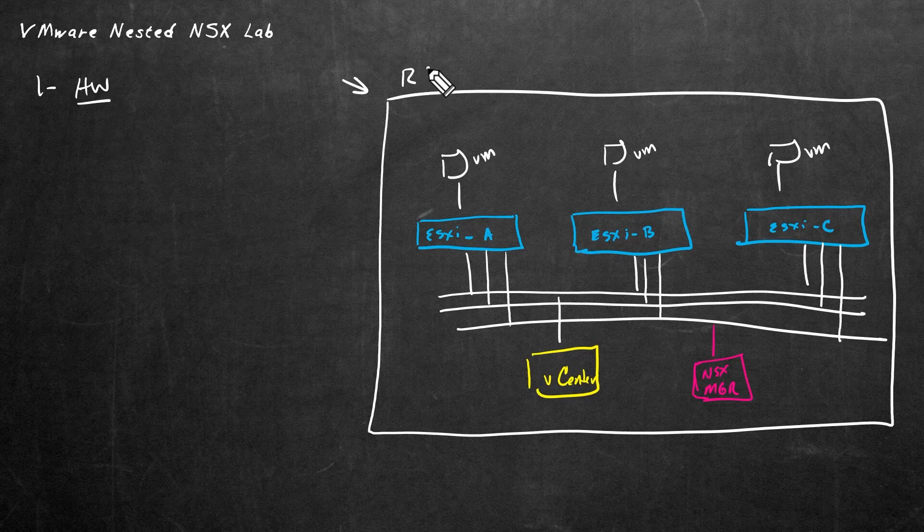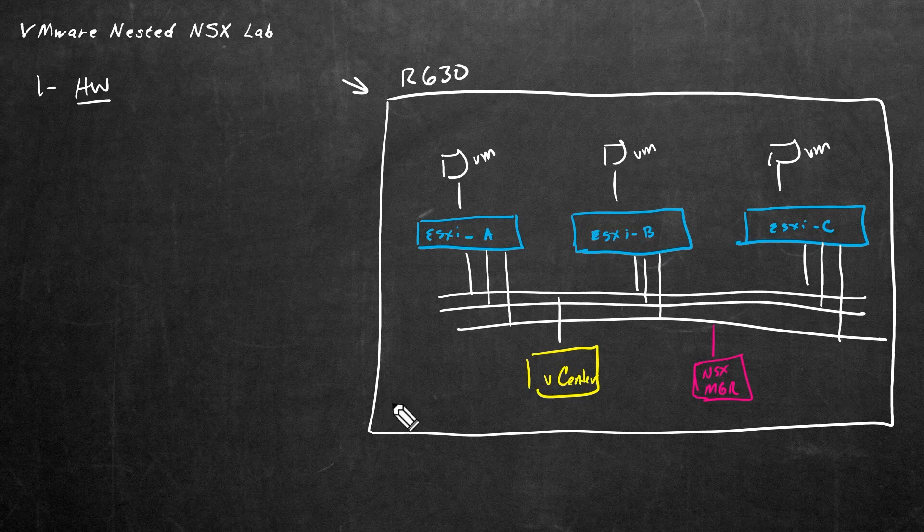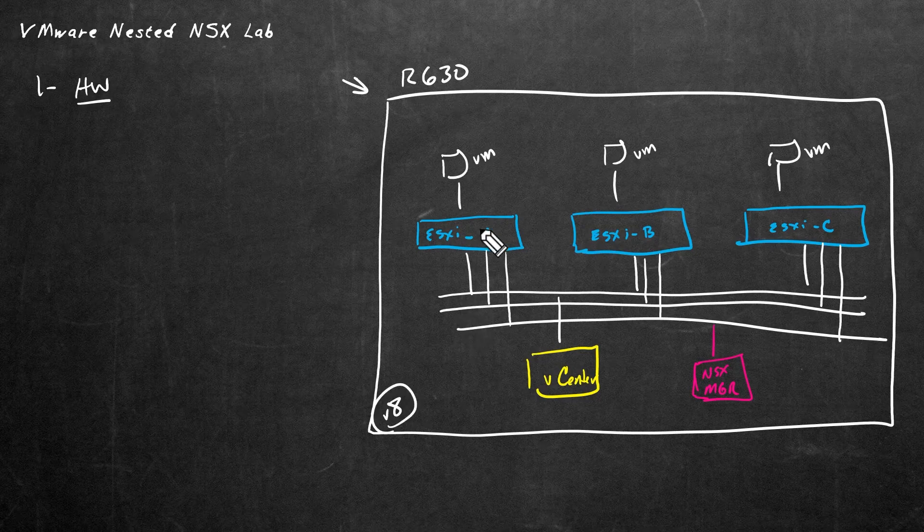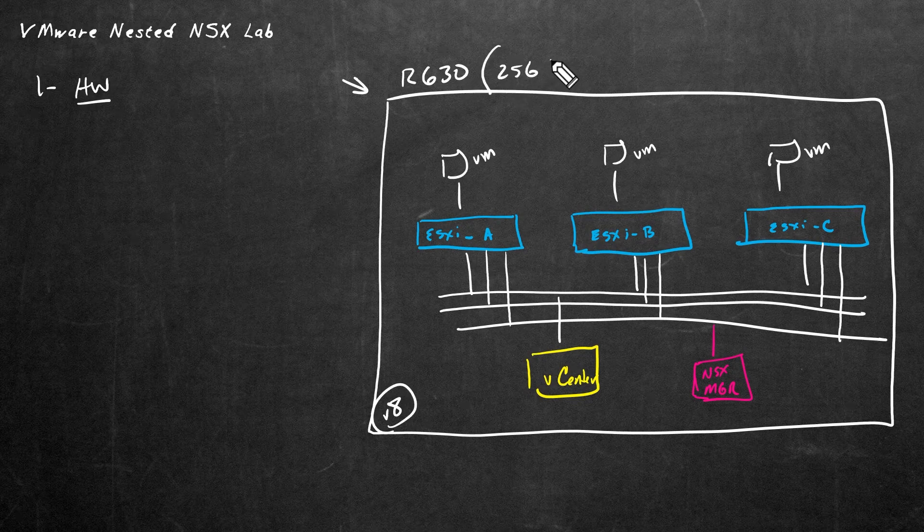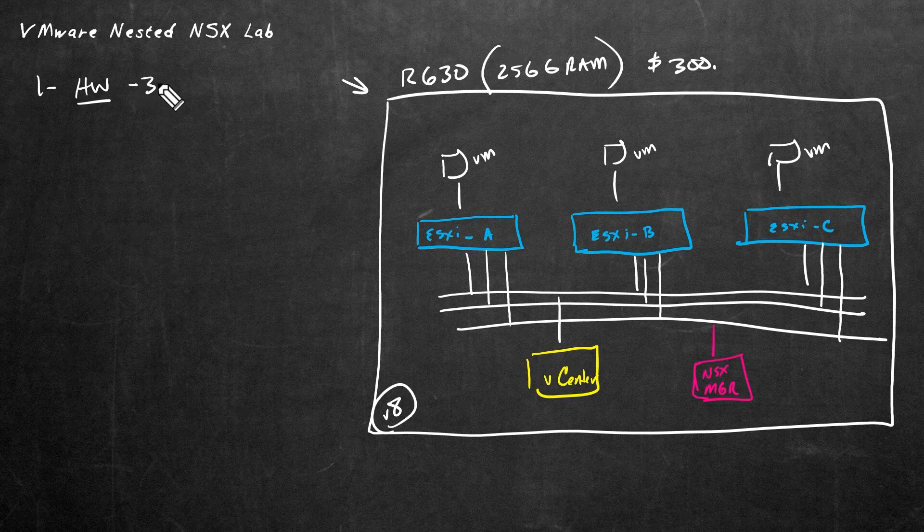So in my lab environment, I have a few R630 servers. Those are from Dell. And even though not all the CPUs that are in the R630s are supported with the current version of vSphere, which is vSphere version 8, for a lab environment, most of the CPUs that are in the Dell R630s will still function. They'll give us a warning that this isn't fully supported, but for a lab environment, it works great. And an R630 today, as of this recording, with about 256 gigabytes of RAM, which is quite a bit, those can be had for close to $300 used on auction sites like eBay.